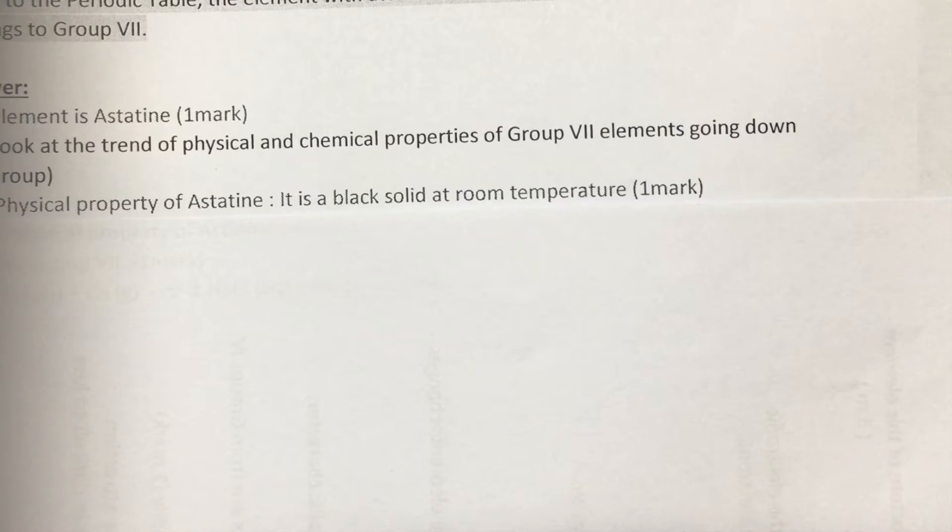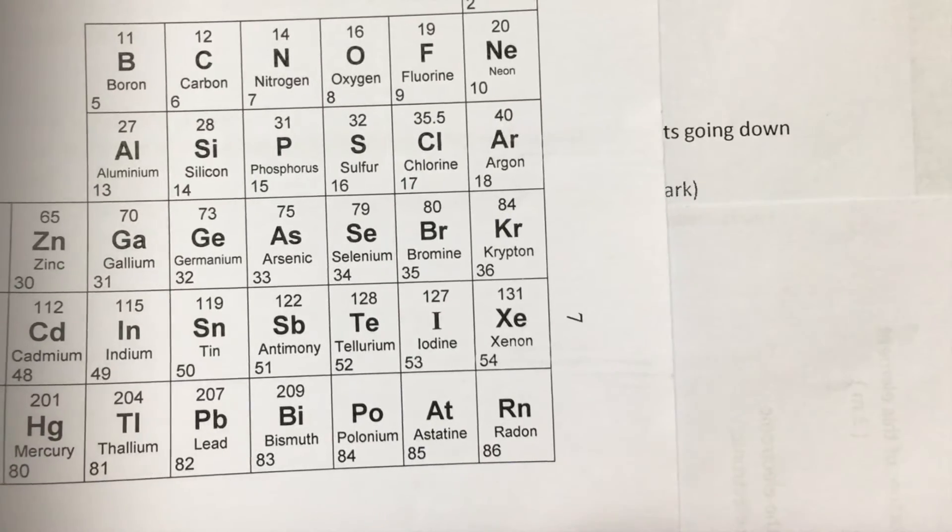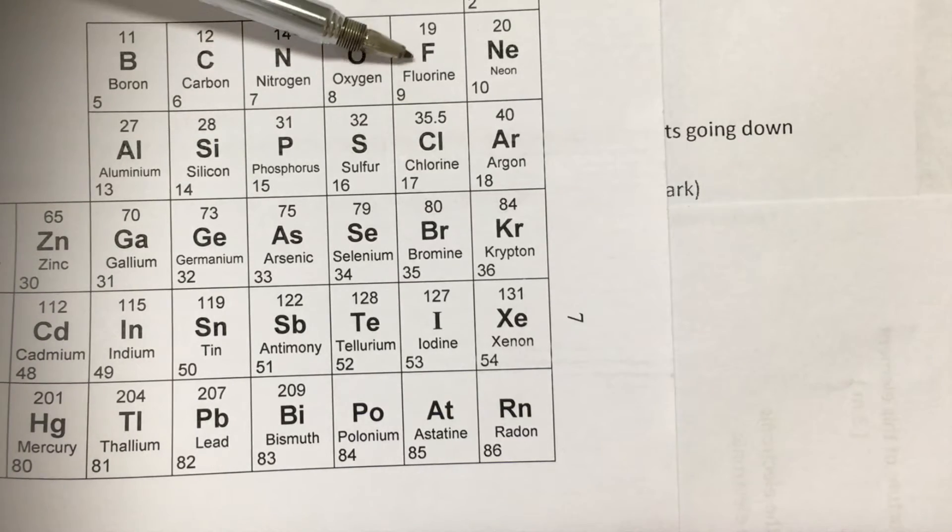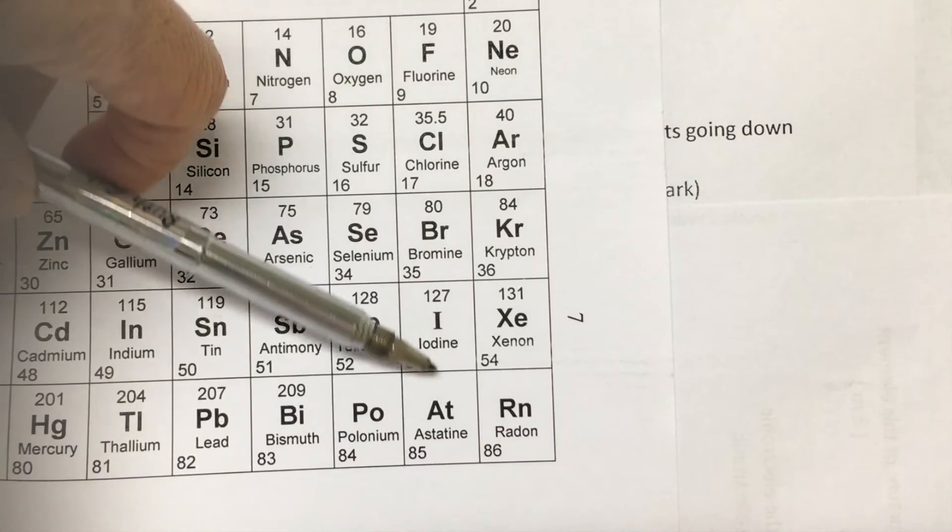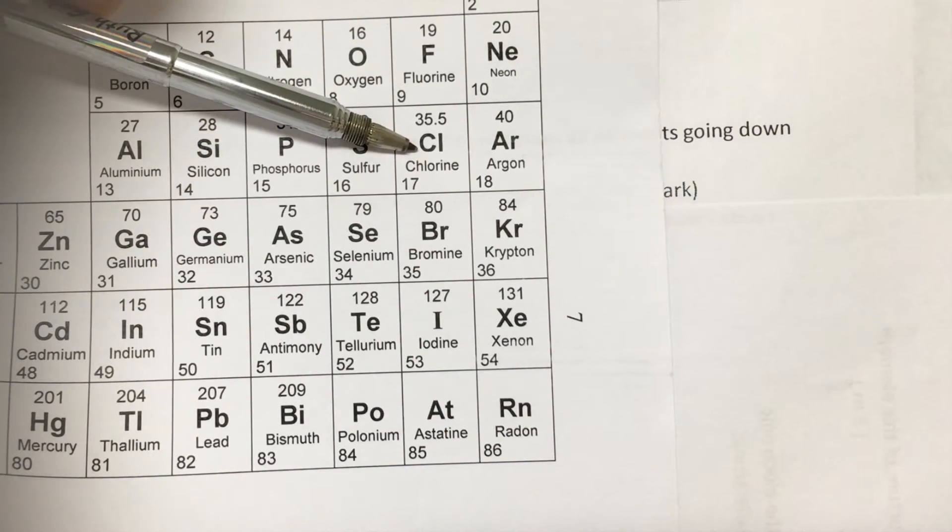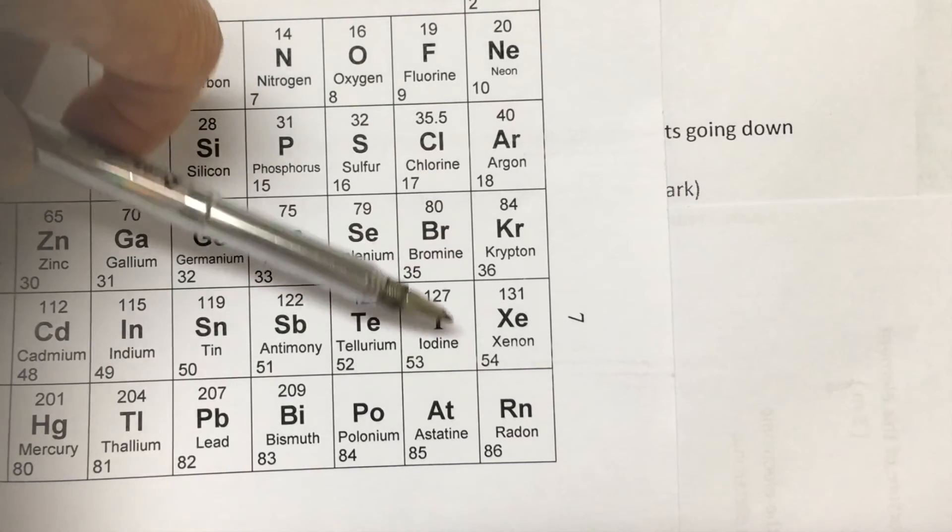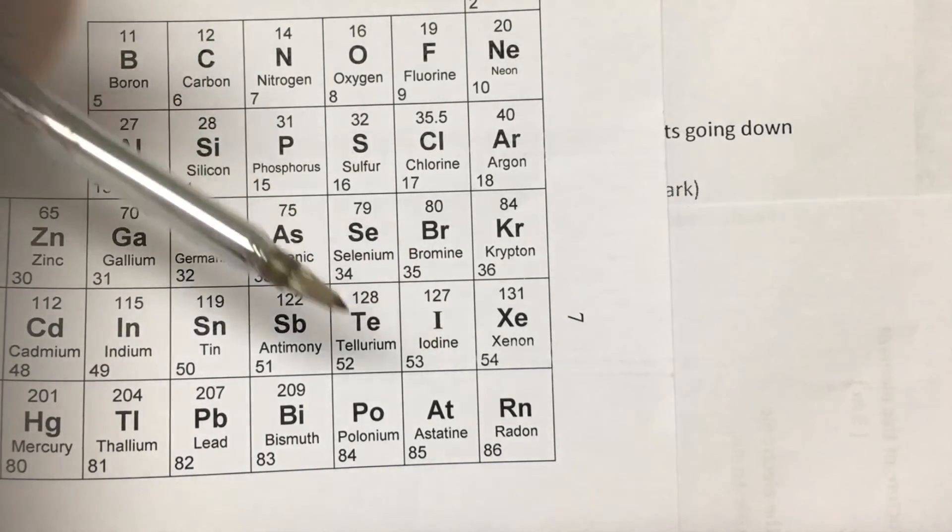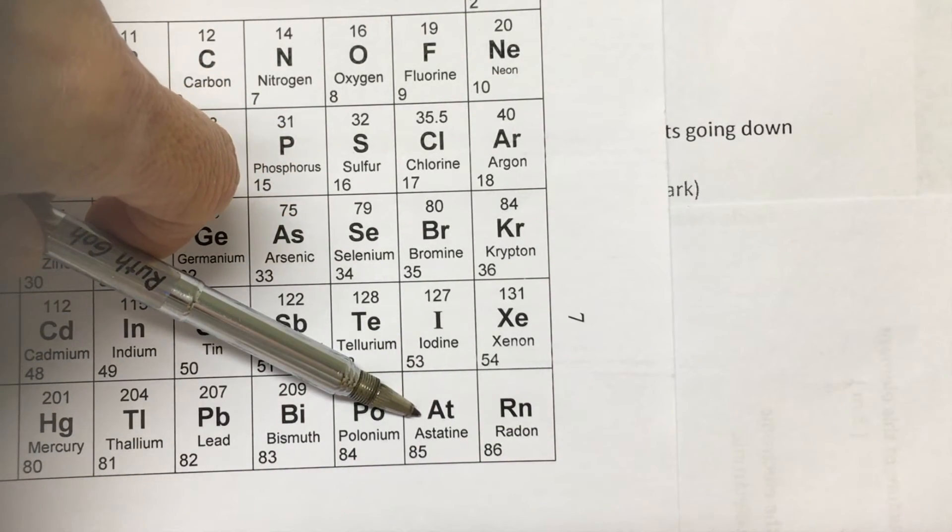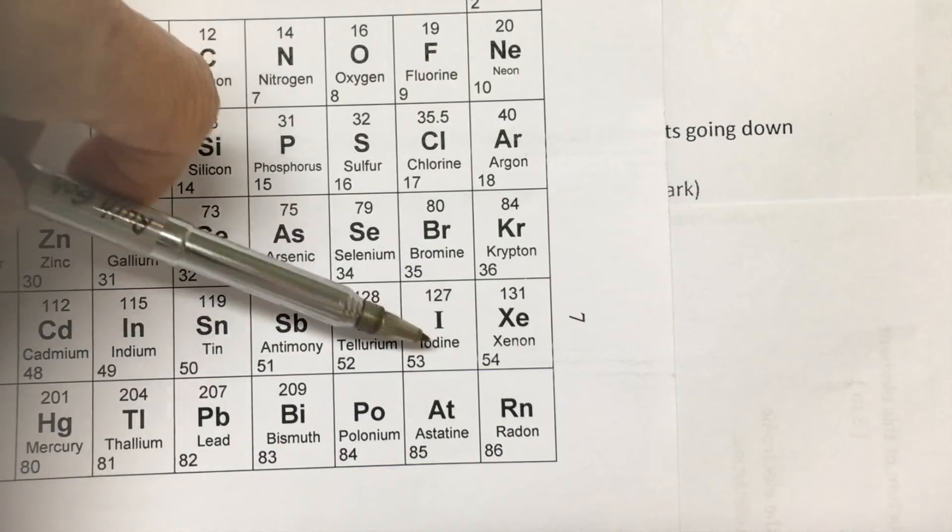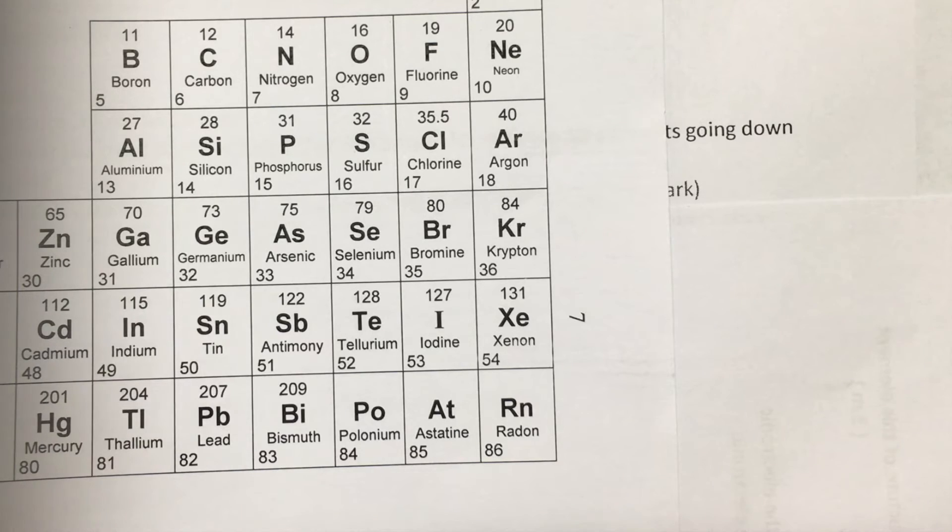For the chemical property, let's look at the trend again. Fluorine, the first member in group 7, being the most reactive, can displace all the other ions from its solution. Similarly, for chlorine, it can displace the bromide, iodide from their solution. For astatine, which is right at the bottom, it can be displaced by all the other elements above itself. This is a displacement reaction for group 7.